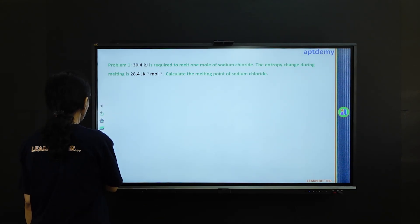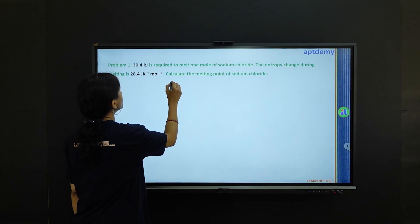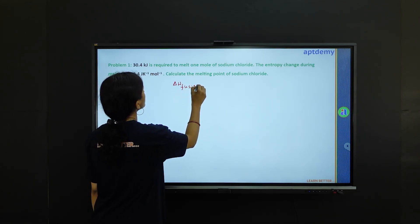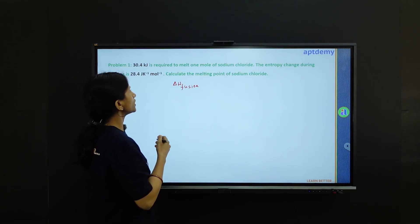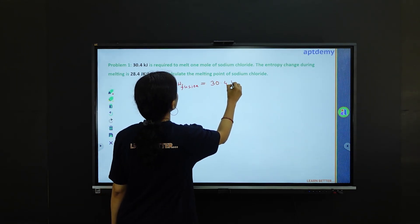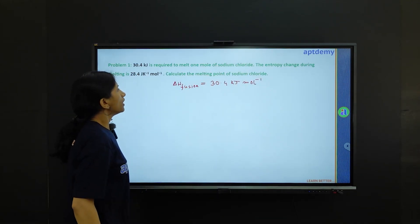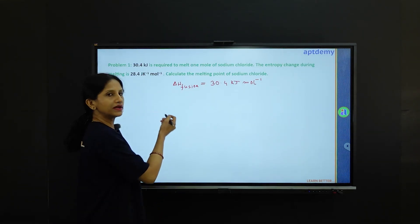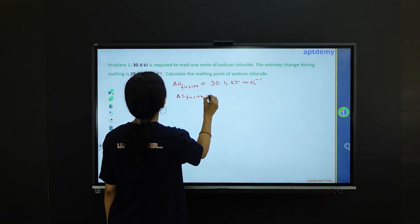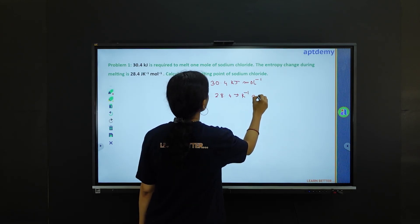Let's see how we can solve this. First, let's write what is given. Delta H fusion — that is, the heat required to melt one mole of sodium chloride — is given as 30.4 kilojoule per mole. Delta S fusion is also given, which is equal to 28.4 joule per kelvin per mole.